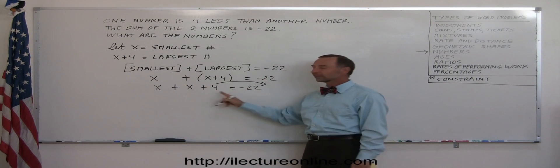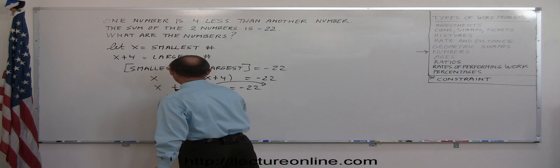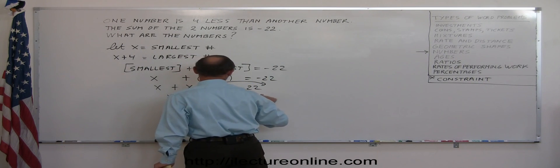Remember, when we cross the equal sign, the sign changes. So this becomes x plus x equals minus 22 minus four.